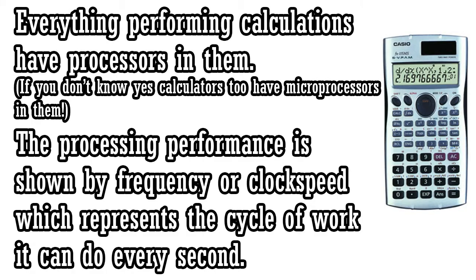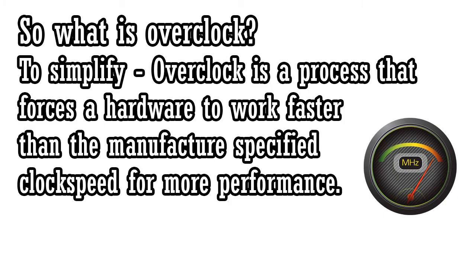Everything in the modern world performing calculations have processors in them and the performance is measured by how many cycles of work it can do per second. This performance number is represented by frequency or clock speed. Overclocking is the process of forcing a computer or hardware component to work faster than the manufacturer's specified clock speed for more performance.